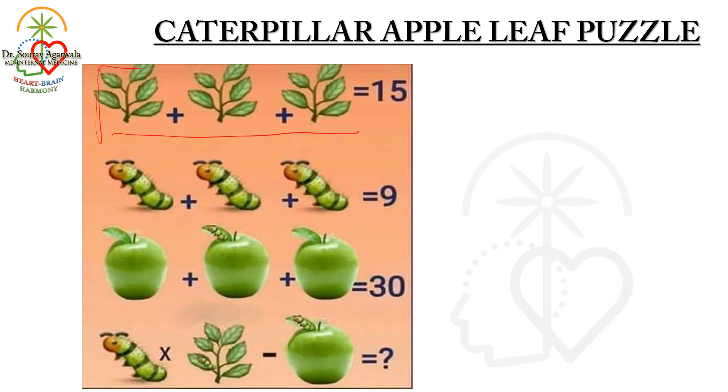First, there are three sets of leaves and each set has five leaves. So five leaves plus five leaves plus five leaves, that means there are 15 leaves and the total number is 15, so each leaf has a value of one.